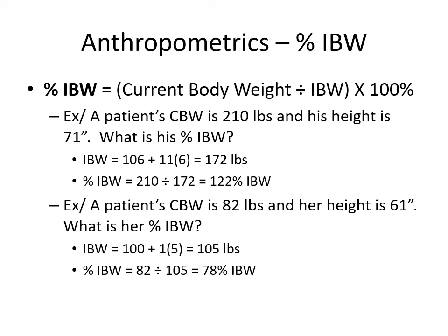Another example: a female patient weighs 82 pounds and her height is 61 inches. IBW = 100 + (1 × 5) = 105 pounds. Percent IBW = 82 ÷ 105 × 100% = 78% of ideal body weight.